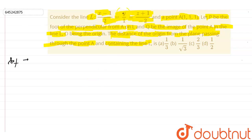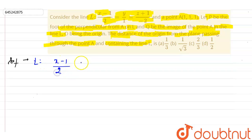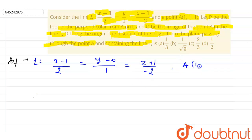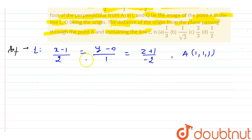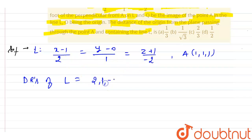I am writing the given equation of line L: (x−1)/2 = (y−0)/1 = (z+1)/(−2), and the point A is (1,1,1). The direction ratios of line L are the denominators, which are 2, 1, −2.